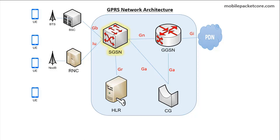The SGSN refers to Serving GPRS Support Node, and it keeps track of the location of the user equipment. In addition, the SGSN performs security functions and access control for the users.